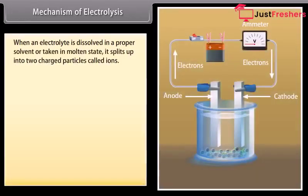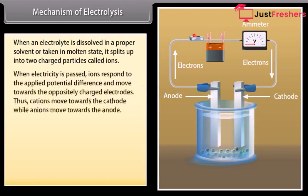Mechanism of electrolysis. When an electrolyte is dissolved in a proper solvent or taken in molten state, it splits up into two charged particles called ions. When electricity is passed, ions respond to the applied potential difference and move towards the oppositely charged electrodes.